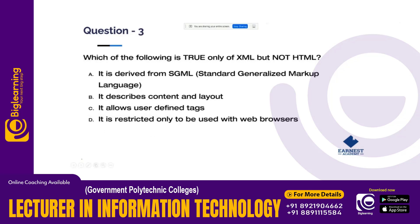Which one of the following is true? Options include: XML is only for XML but not HTML; XML is not case sensitive while HTML is not data; it is derived from SGML — Standard Generalized Markup Language; it derives content and layout; it allows user-defined tags; it is restricted only to be used with a web browser.